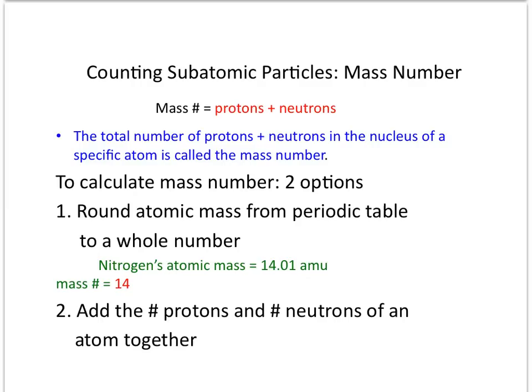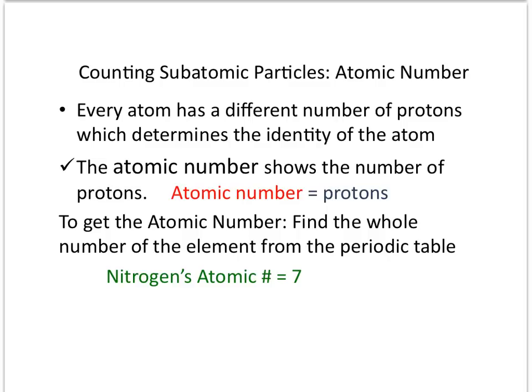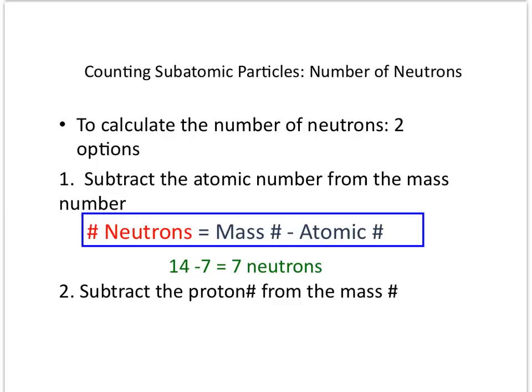Nitrogen's average atomic mass is 14.01 amu. Find it on your reference sheet to verify that number. We are just going to round it to a whole number, and we get a mass number of 14. Another important number is called the atomic number, and that tells you how many protons are in the nucleus of an atom. Every element in this world has a different number of protons, so the atomic number is a way to identify an unknown atom. If we find nitrogen again on the periodic table, you will notice that it has an atomic number of 7 — it is the whole number in the block.